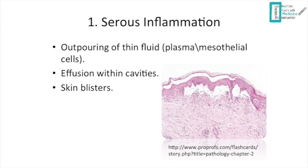Serous inflammation involves separation of two tissue layers due to fluid and plasma accumulation. It is seen in pleural effusion, ascites, and other body cavity effusions. It also presents as skin blisters, where the epidermis is separated from the dermal layer.